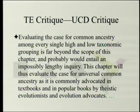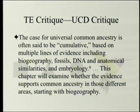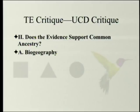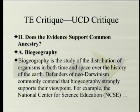Where you see green ellipses, I'm leaving stuff out. The case for universal common ancestry is often said to be cumulative, based on multiple lines of evidence including biogeography, fossils, DNA, anatomical similarities, and embryology. This chapter will examine whether the evidence supports common ancestry in those different areas, starting with biogeography.